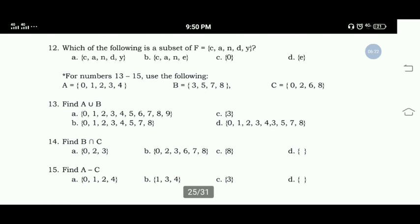Number 12: Which of the following is a subset of set F having elements C, A, N, D, and Y? The correct answer for number 12 is Letter A. Elements C, A, N, D, Y is a subset of C, A, N, D, Y. Letter B is not a subset because element E is not in set F, and O is also not an element of F.